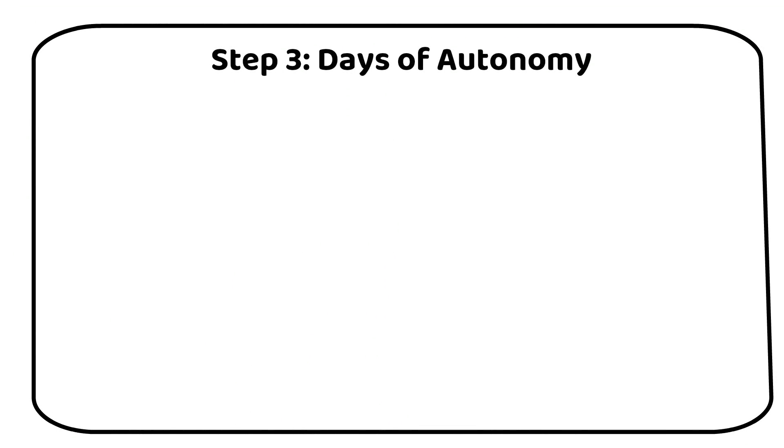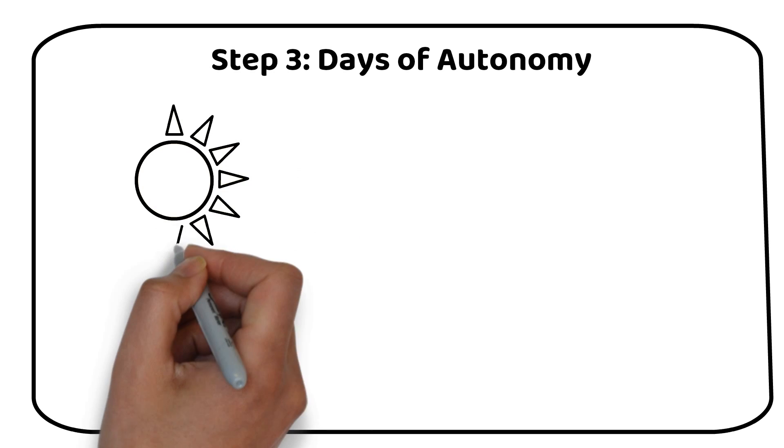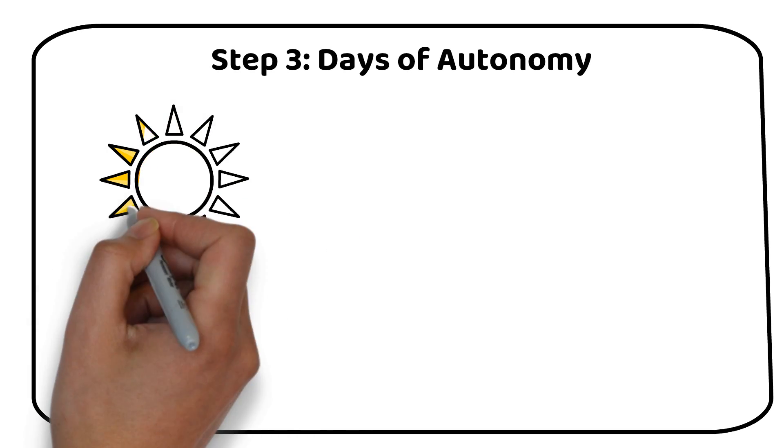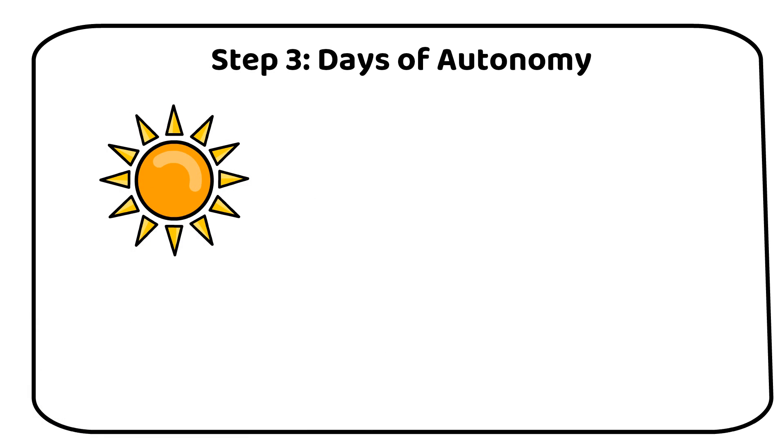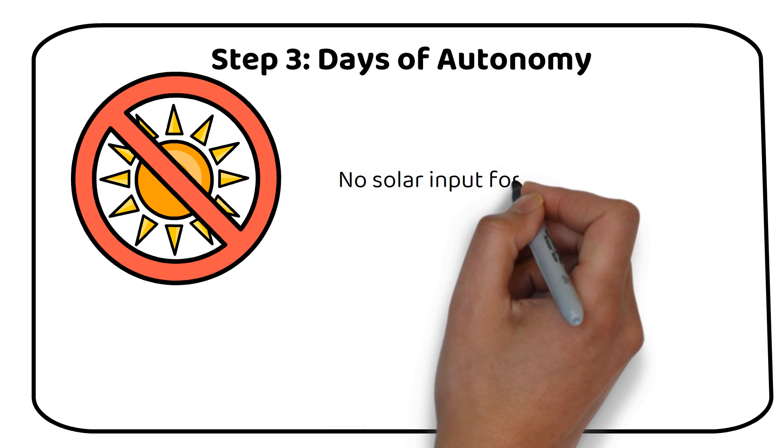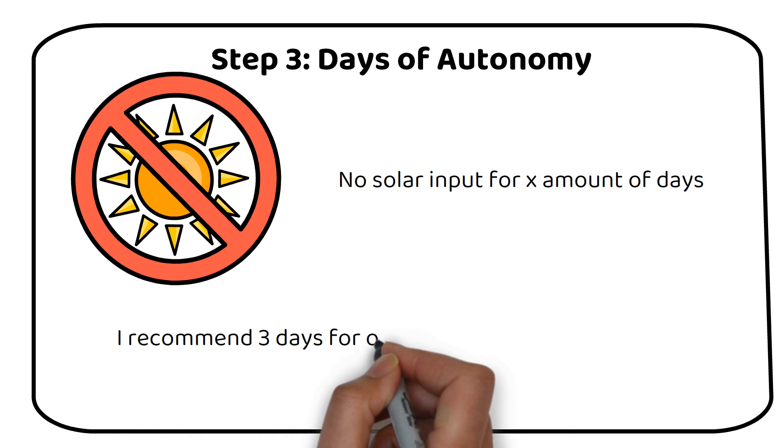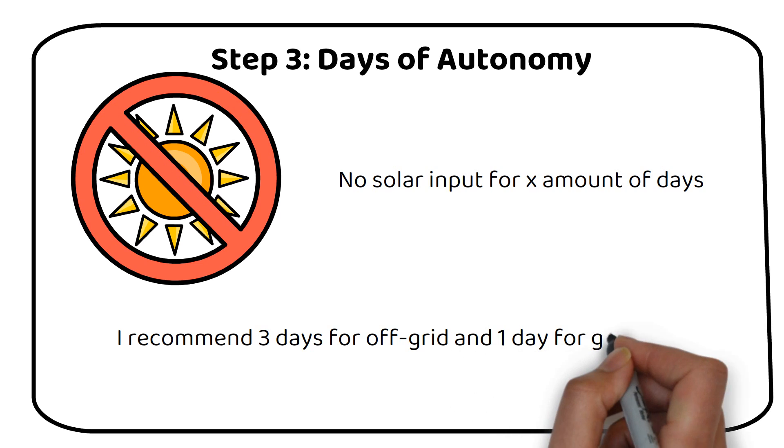Step 3. Days of autonomy. This step involves deciding how many days you want your system to run solely on battery power, assuming no solar input. This is known as days of autonomy. I recommend planning for 3 days to ensure a reliable power supply, even during consecutive days without sunlight. This duration is a balanced choice for most setups. However, if you're connected to the grid, one day of autonomy might be sufficient.